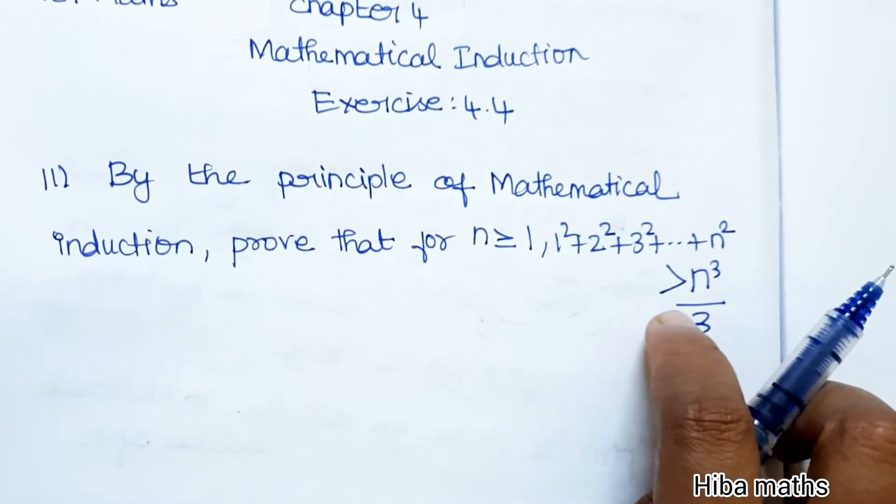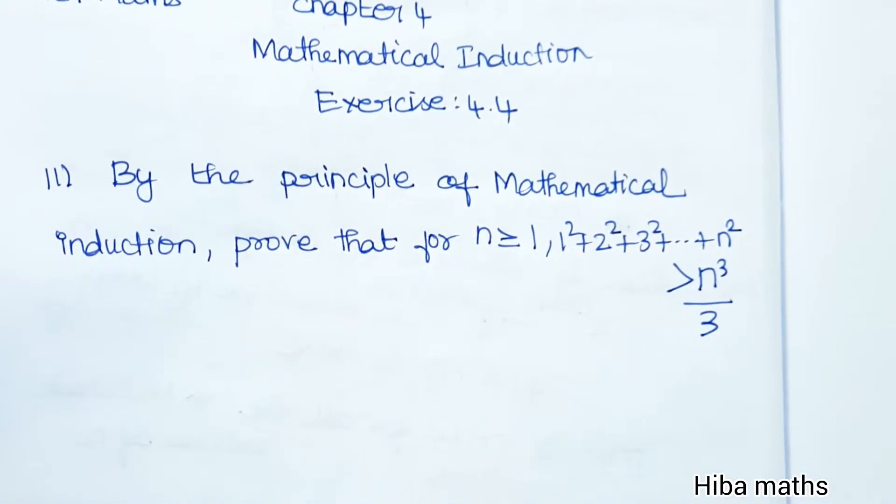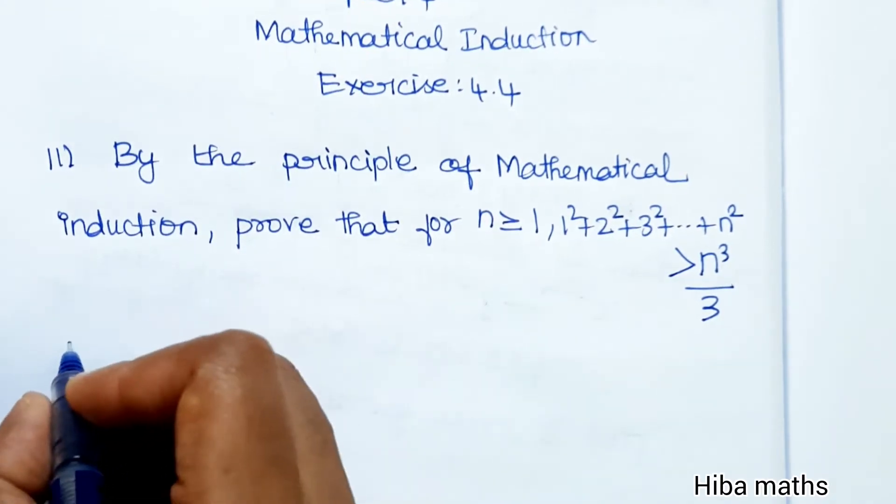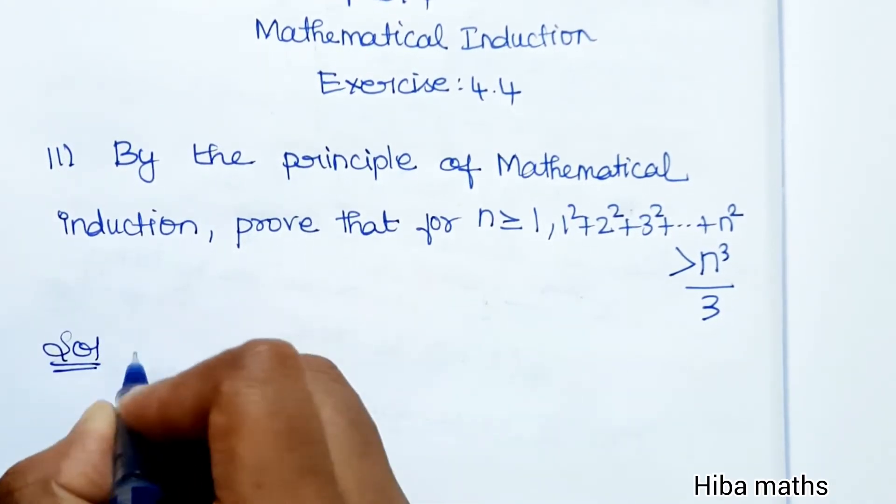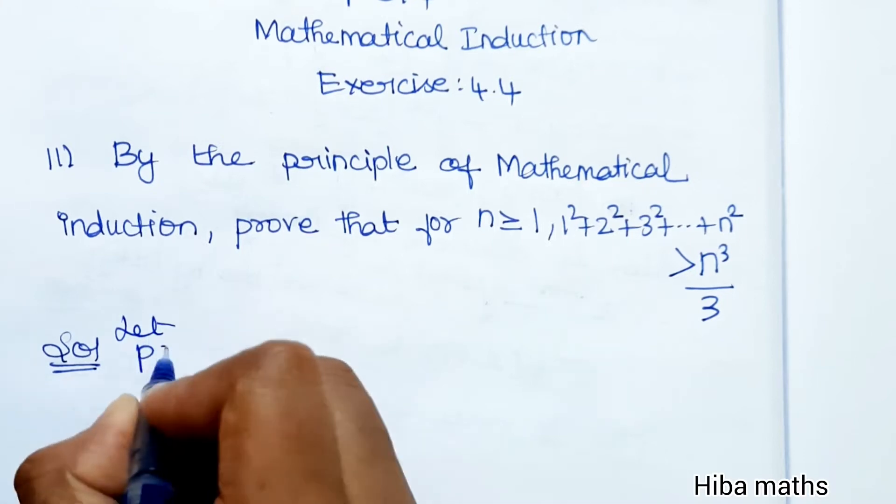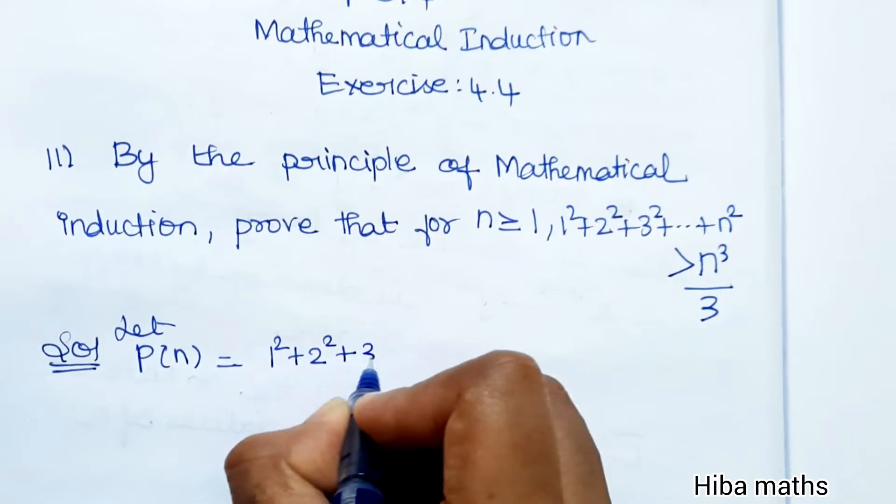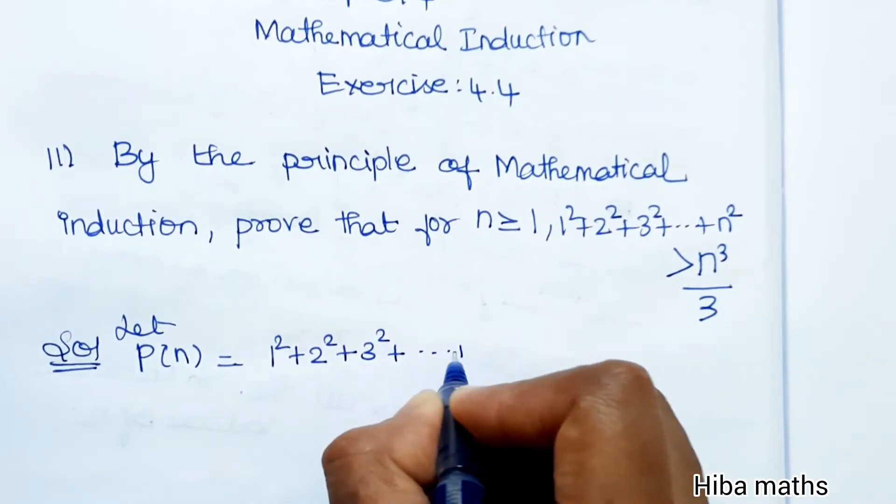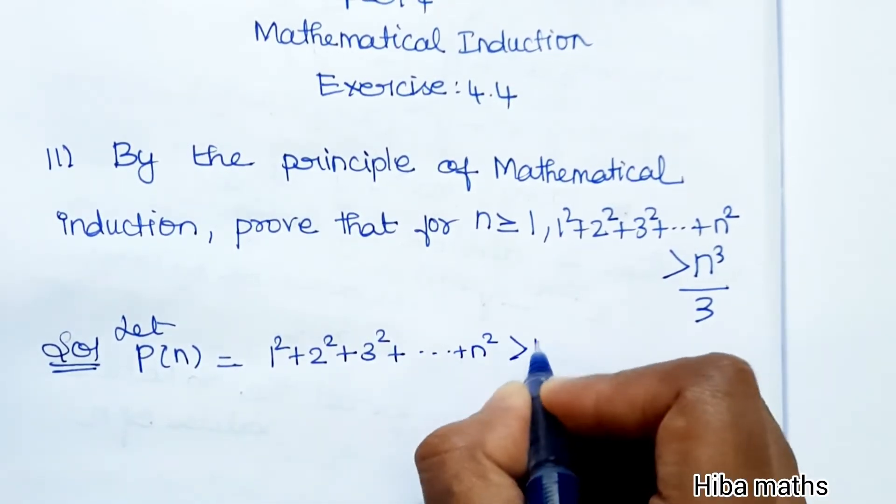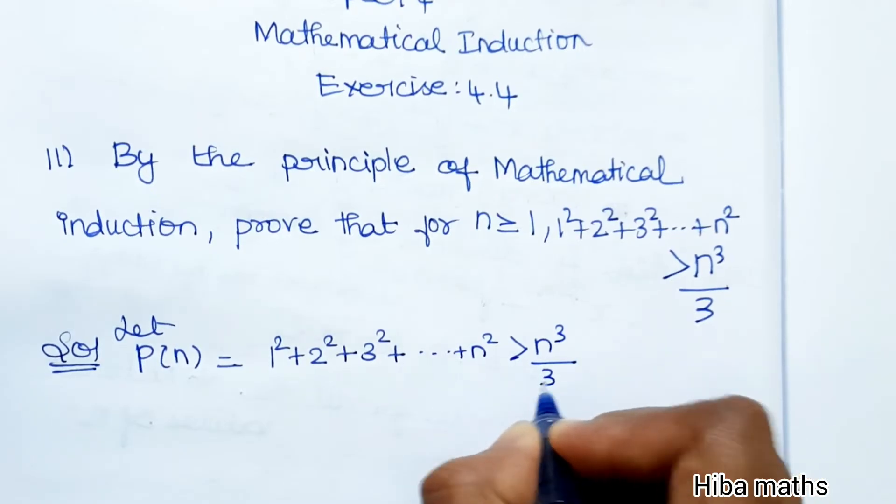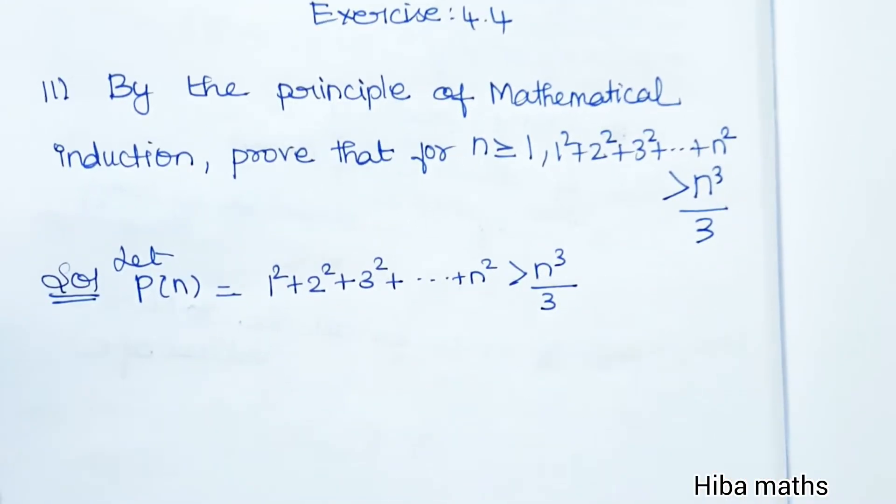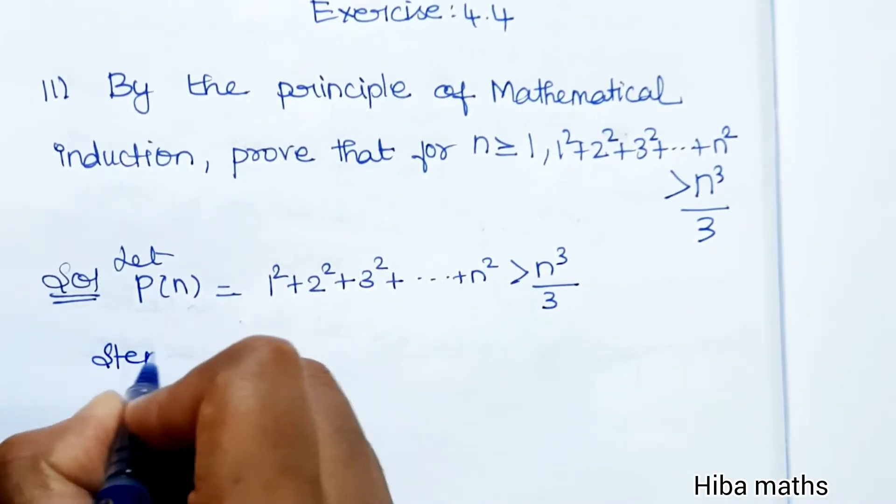In this question we have a greater than symbol instead of equals. How do we solve it? Let's see the solution. Let P(n) = 1² + 2² + 3² + ... + n² > n³/3. Now, what do we do in the first step?